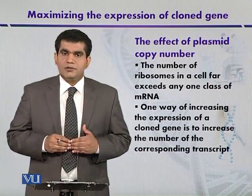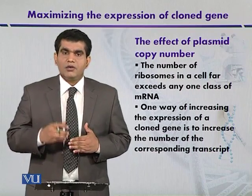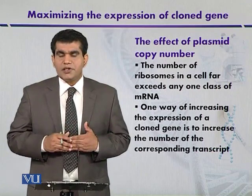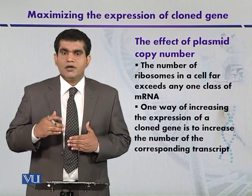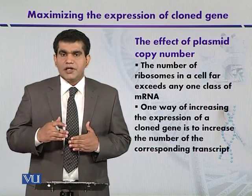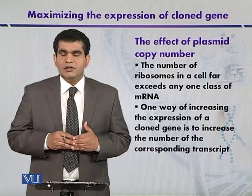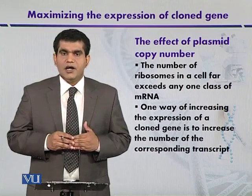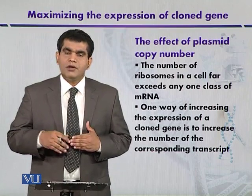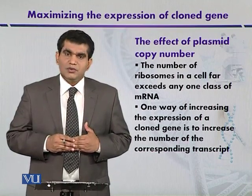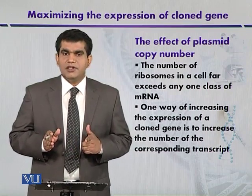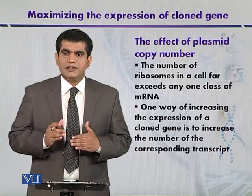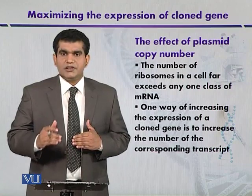Another component is a repressor protein called the ROP protein. These two negative regulator components — RNA1 and ROP protein — determine the copy number of the plasmid by controlling the interaction of another RNA, called RNA2, with the origin of replication. RNA2 is also synthesized by a region of the DNA within the origin of replication; in other words, the same region that synthesizes RNA1 also synthesizes RNA2.